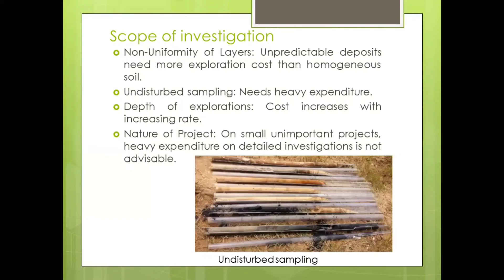Here you can see an image showing cylindrical soil samples of some meters in length. They are of different texture, different color, and different properties. If you look at one sample, it is very disturbed — not in its natural state. In contrast, a brown-colored sample continues for a considerable length. For another sample, the same deposit exists for only half or even less than half the depth. This means soil strata are not the same at all positions.